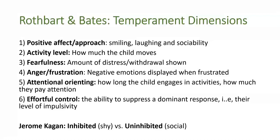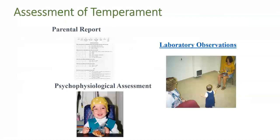Researchers have three main ways of capturing temperament profiles in children. First is the parental assessment, where parents are given a questionnaire aimed to measure temperament dimensions. Based on how parents respond, children receive a score for a particular dimension, giving us a temperament profile. With psychophysiological assessments, you can measure physiological states like heart rate or brain activity. For example, measuring heart rate when a child encounters novel situations shows how the response differs from child to child. Children who are inhibited may have a faster heart rate when encountering new circumstances than children who are not inhibited.